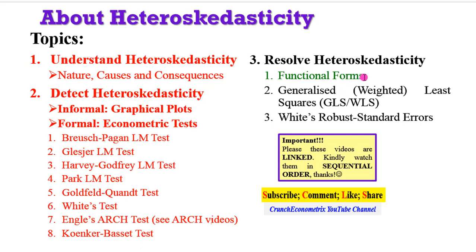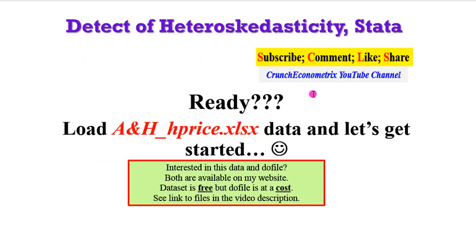So now we go ahead to looking at how we can resolve heteroskedasticity using the functional forms of the model. If you are ready, please load your data and follow my guide. But if you want to use my data, the link to that is in the video description. Click on it, and it will take you to the file, which is available on my website. The data is free, but the do file, you have to purchase it at a token. So let's get ready and dig in.